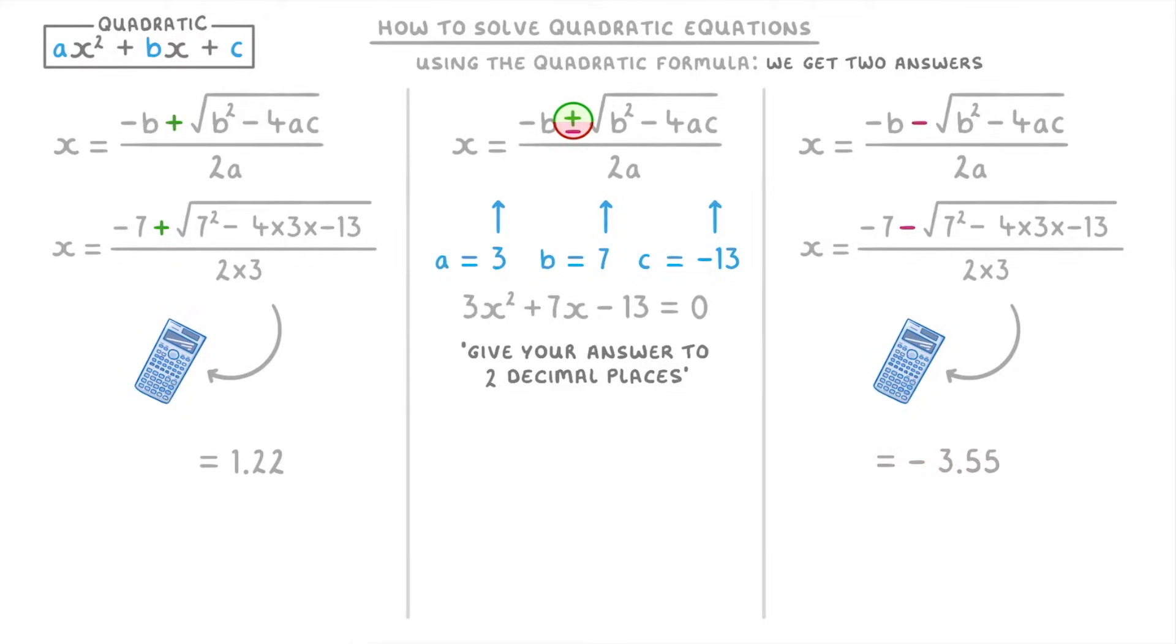But you do need to be careful because it's really easy to make a mistake. The most common problem is with this minus sign inside the square root. So it's always best to stick these 4ac bits in a bracket.